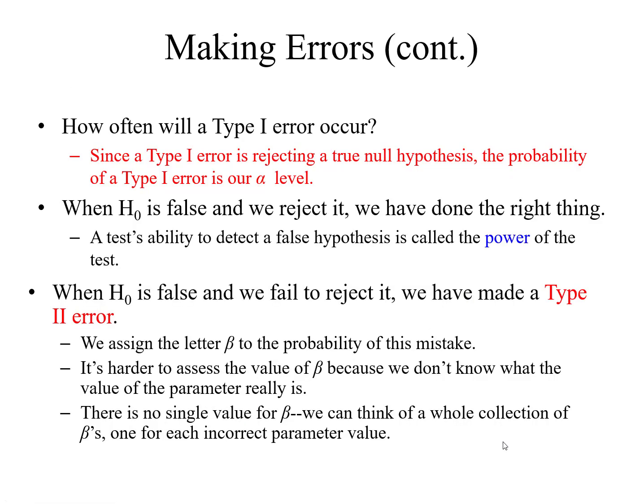How often will a type 1 error occur? Since a type 1 error is rejecting a true null hypothesis, the probability of a type 1 error is our alpha level. Alpha denotes the level of significance — it denotes that you reject a good quality product even though its quality is good. When H0 is false and we reject it, we have done the right thing. The ability to detect a false hypothesis is called the power of the test.